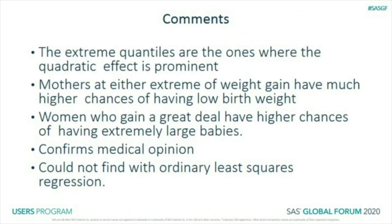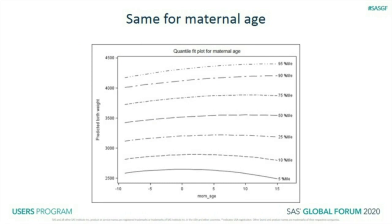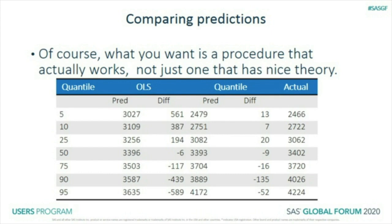The extreme quantiles are where the quadratics matter — you couldn't find this with ordinary least squares, and this confirms medical opinion. For accuracy: at the 5th percentile, OLS predicted about 3 kilograms while quantile regression predicted about 2.5 kilograms. Quantile regression was off by only 13 grams, whereas OLS was off by half a kilogram. At the 50th percentile (median) the two methods were very similar.